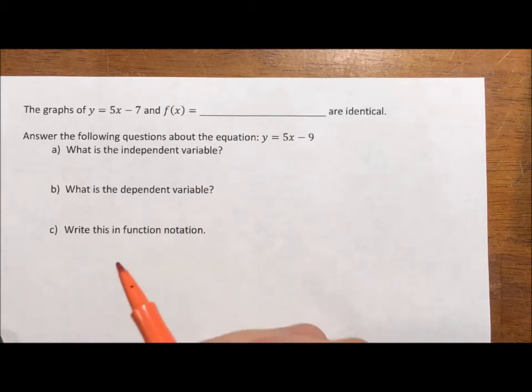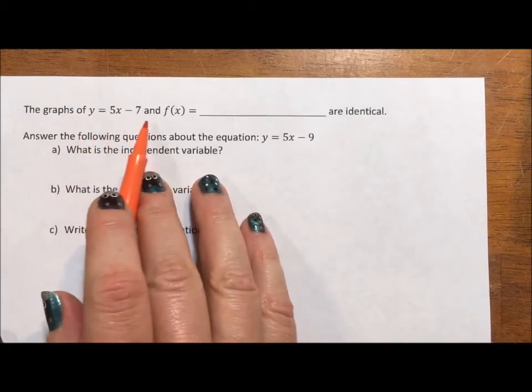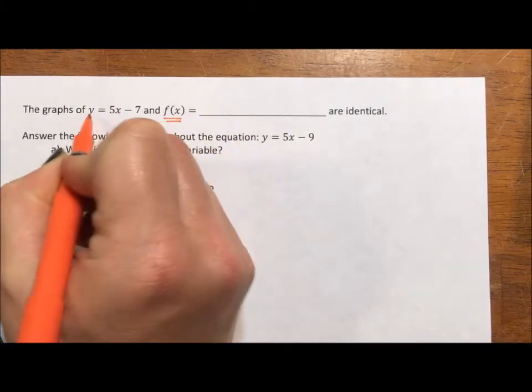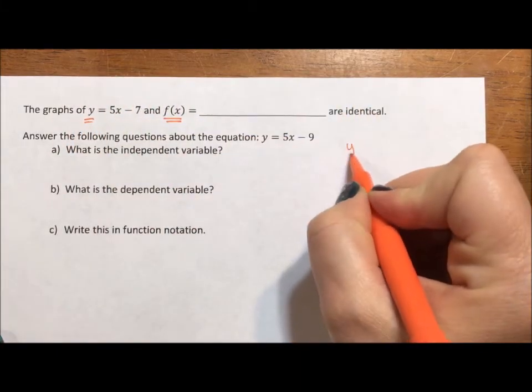I want to talk about the connection between a graph, a line, and function notation. Function notation is exactly the same as y. y equals f of x.